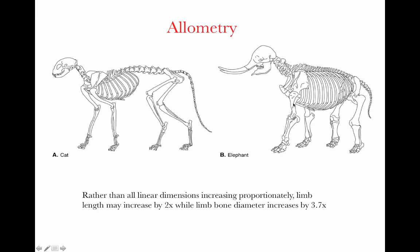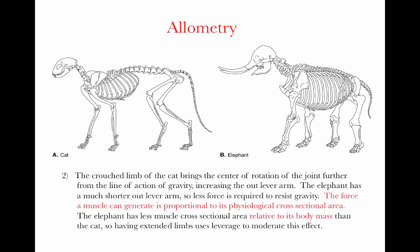We can also think about the postures taken by these animals. The crouched limb of the cat brings the center of rotation of the joint — for example the knee joint — very far from the line of action of gravity coming through the foot, creating a long out-lever arm. With the more upright posture in the elephant, there is a much shorter out-lever arm, so less force needs to be generated by the postural muscles to resist gravitational force.